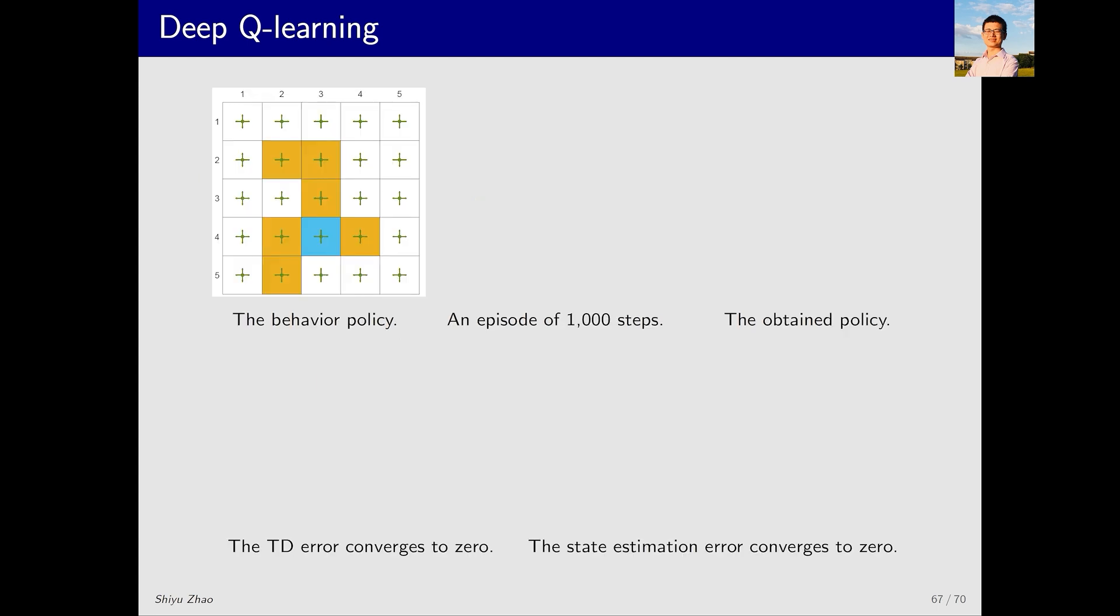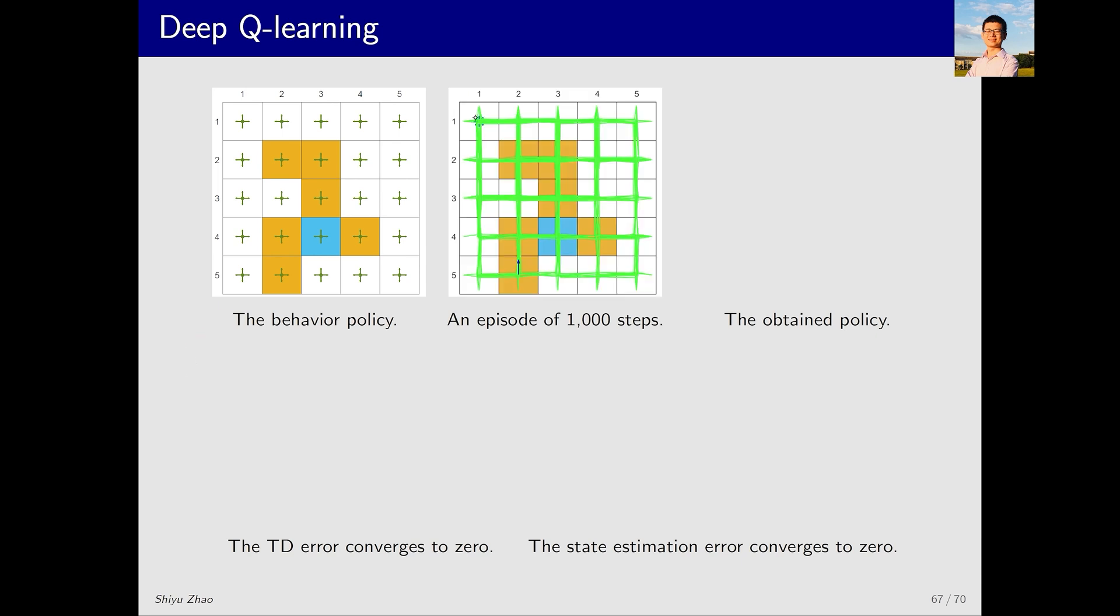Now let's look at the simulation results. This is the behavior policy we used. Starting from here, I ran one episode for 1,000 steps, and this is the episode we obtained. As you can see, almost all the state-action pairs were visited, though some were visited more times than others. If we increase the number of steps to 100,000, as we did in the tabular case, all state-action pairs would be visited many times. But in this case, the visits are relatively fewer.